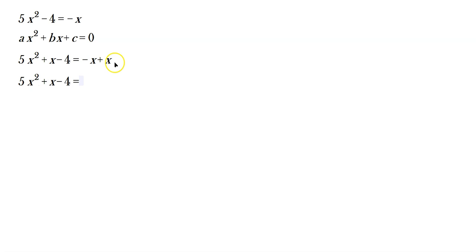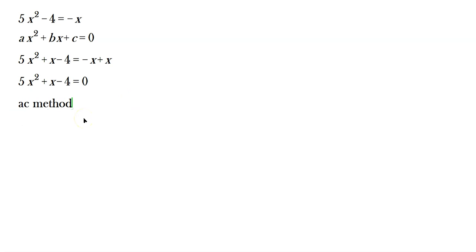On the right side, negative x plus x is 0. A common mistake is people drop the equals 0 part — no, it's an equation, you need the equals 0 the entire time. Now this one has to be factored using what I call the AC method with grouping, if you can't factor it by inspection.